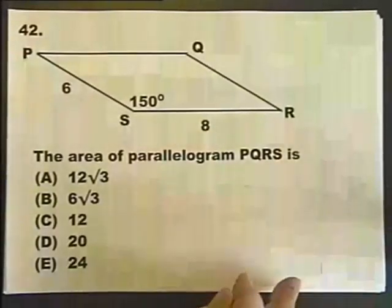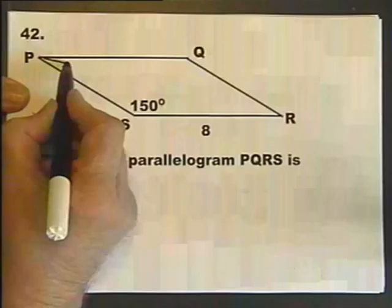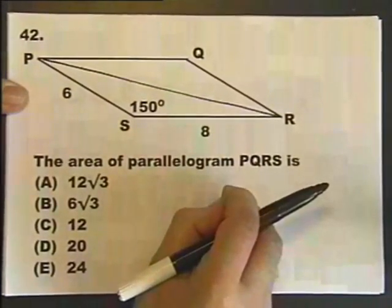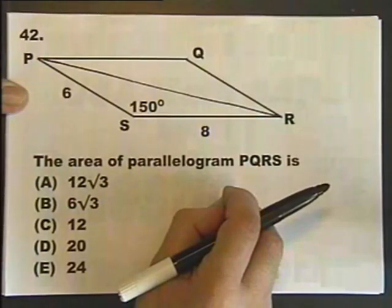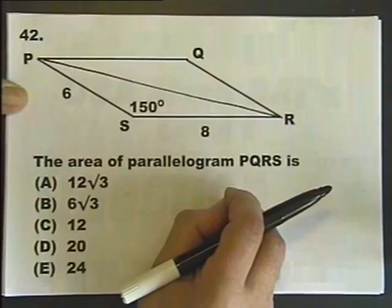Now I hope you appreciate that a parallelogram is two triangles. So if we split that down there, we will get two triangles of exactly the same size. We call them congruent triangles. So the area of a parallelogram is twice the area of a triangle.